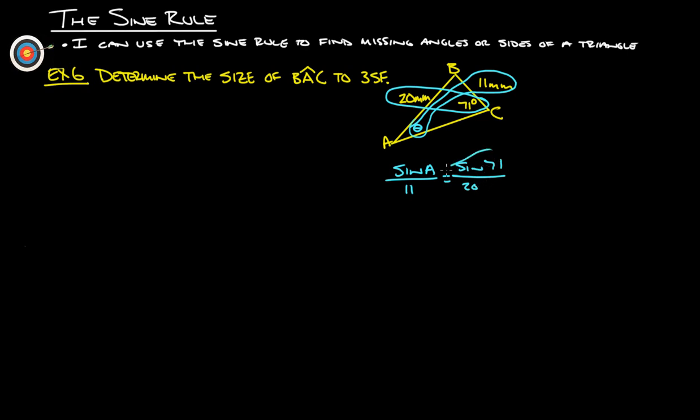All right. So, simply cross multiply, divide by the leftover, and that will give us what sine A is going to equal.